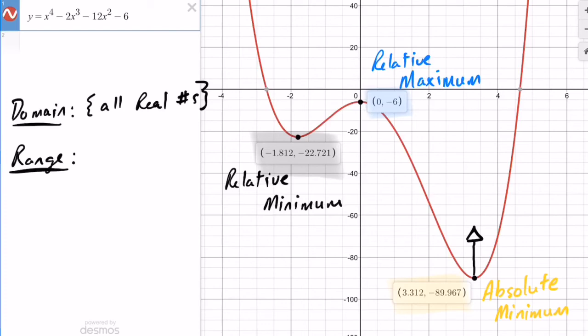So all the y values are bigger than or equal to negative 89.967, because as we go up, we get bigger y values. Therefore, the range is y is greater than or equal to negative 89.967.